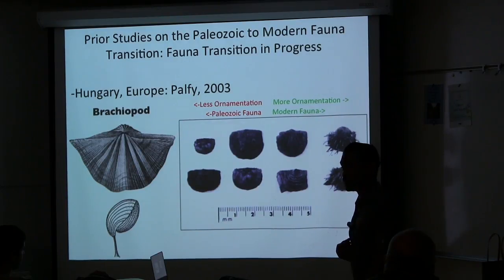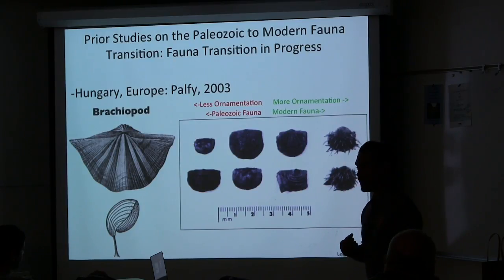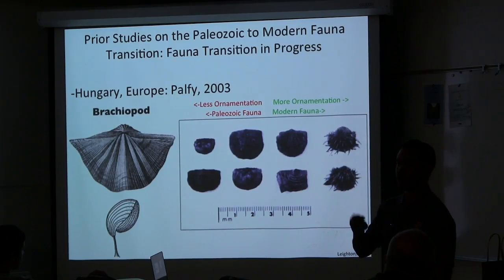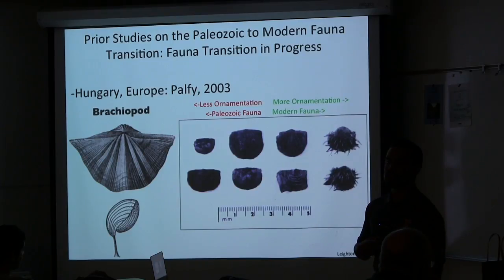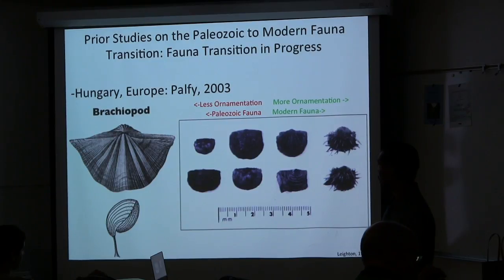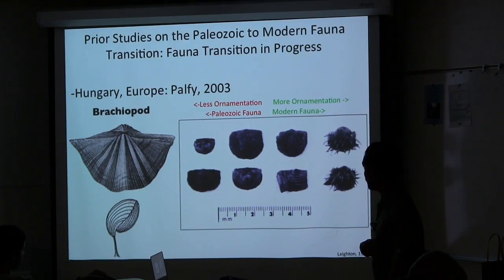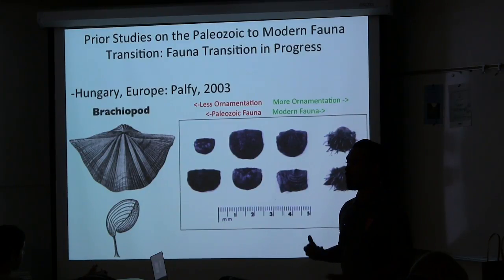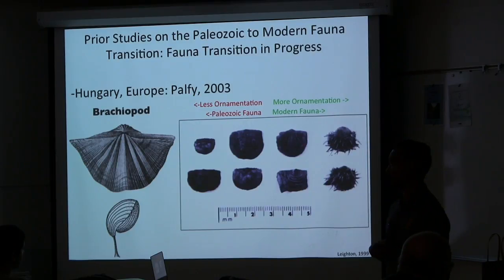Palfi's 2003 study looks at Middle Triassic brachiopods in Hungary, with the goal of determining if these brachiopods fell under Paleozoic or modern fauna. Using Layton's 1999 shell ornamentation scheme, Paleozoic fauna would show less ornamented shells while modern fauna would show more ornamented shells. Palfi finds that most brachiopods fall under Paleozoic fauna, but there is some evidence of modern fauna, suggesting that the Paleozoic fauna transition was occurring during the Middle Triassic.